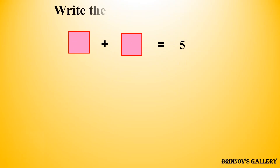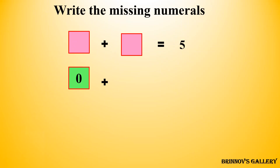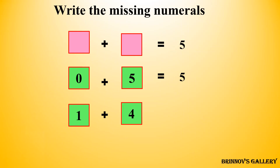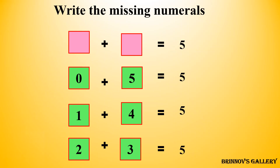Write the missing numerals. 0 plus 5 is equal to 5, or we can also fill 1 plus 4 is equal to 5, or two plus three is equal to five. We can choose any option from these possibilities to fill the missing numerals.